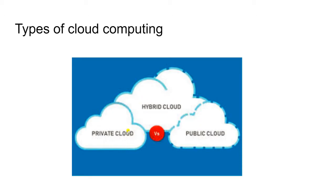Hybrid cloud — a combination model. Private, like a company — especially financial companies — keeps sensitive data in-house. So in-house, or on cloud, depending on the data. Some data and operations are kept in-house, and some services are released to the public cloud via the internet. That scenario is where hybrid cloud is recommended for a company.